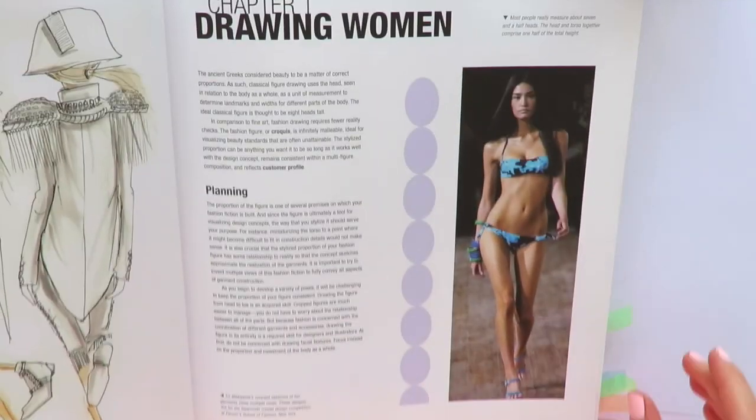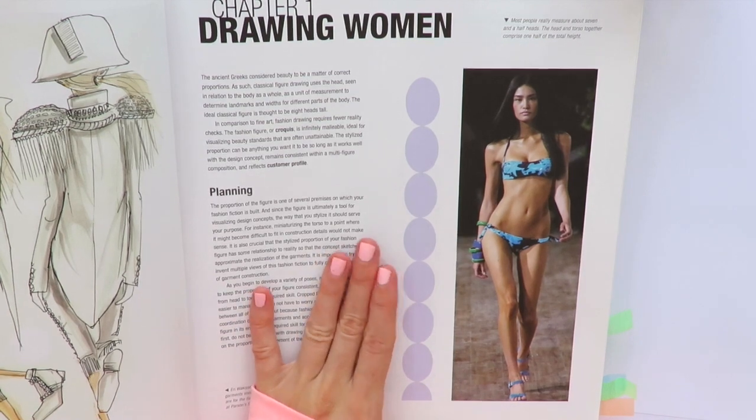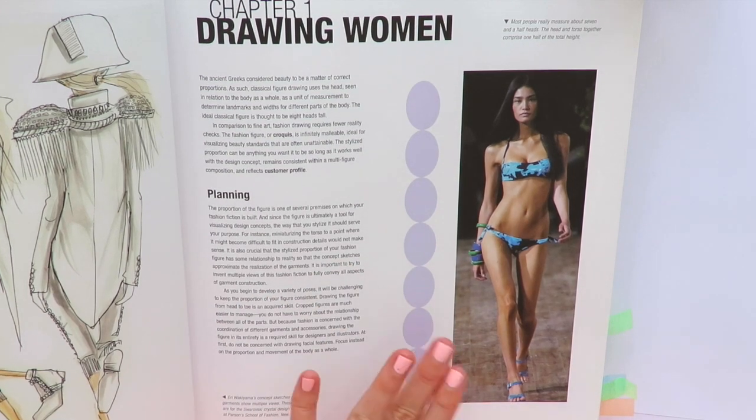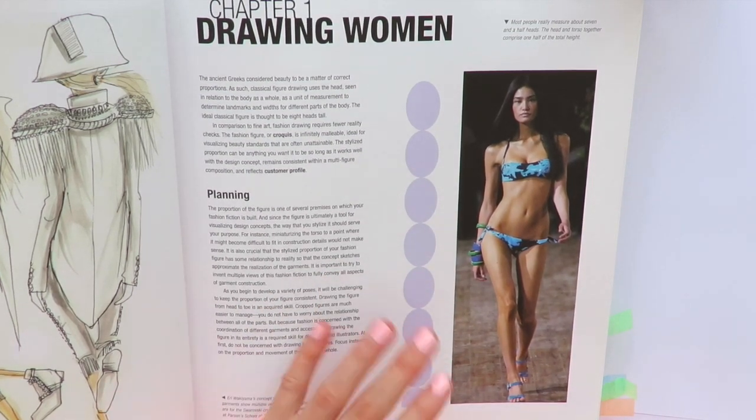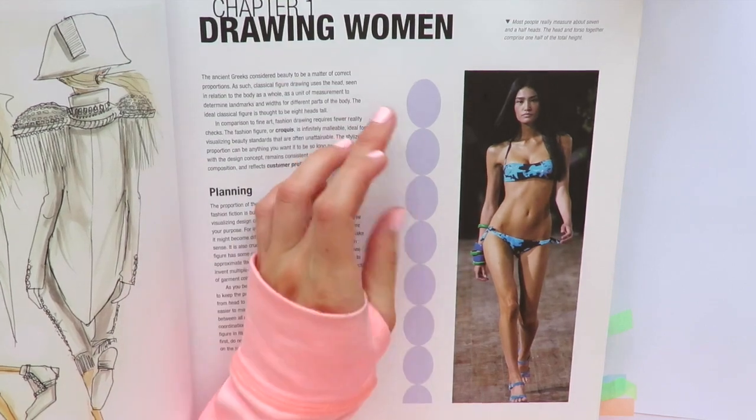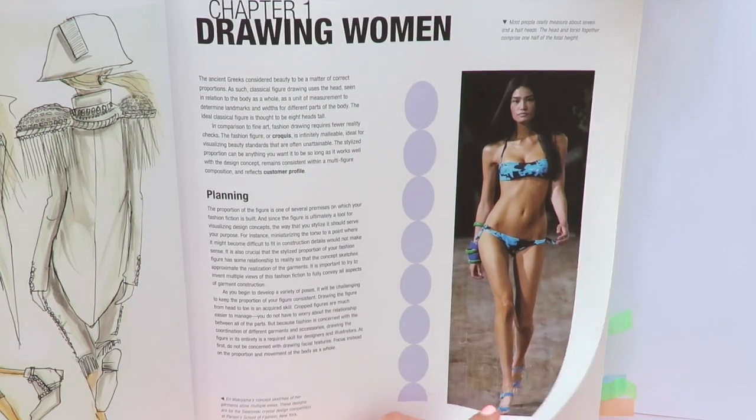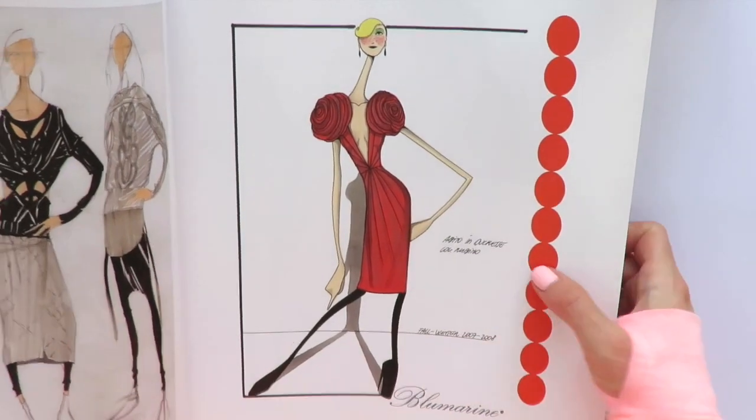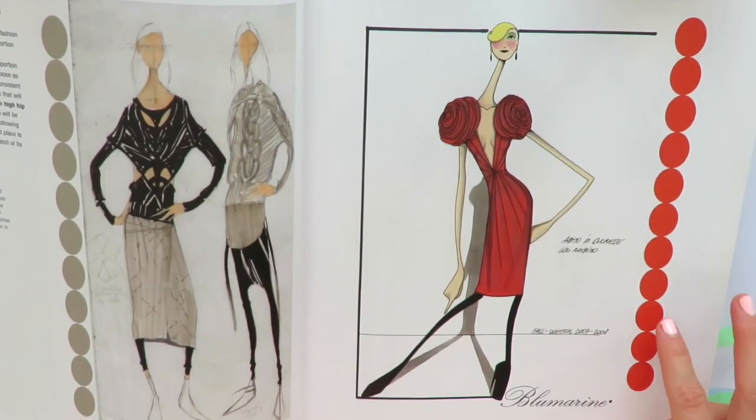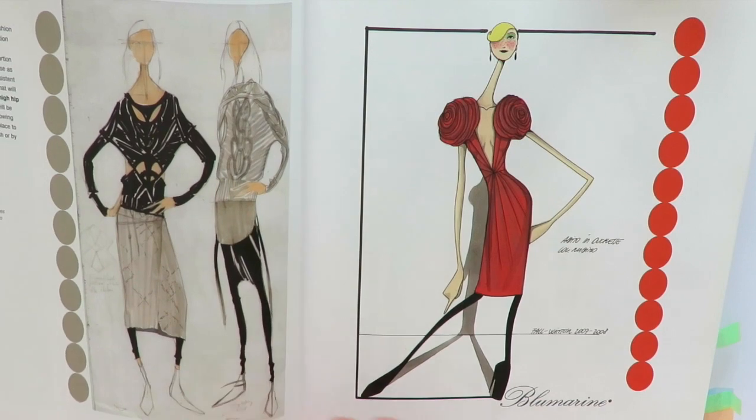Fashion illustrators really like to extend and make the girls thinner because it looks aesthetically pleasing. Let's count how many heads this model has - one, two, three, four, five, six, seven and a half. She's in high heels. But look at the next page - 11 heads here on the right, and even more, 12 heads on the left.